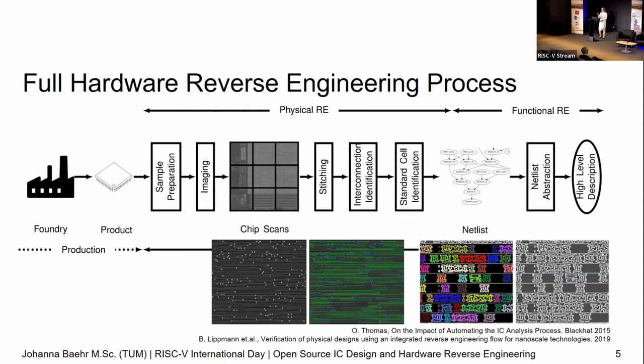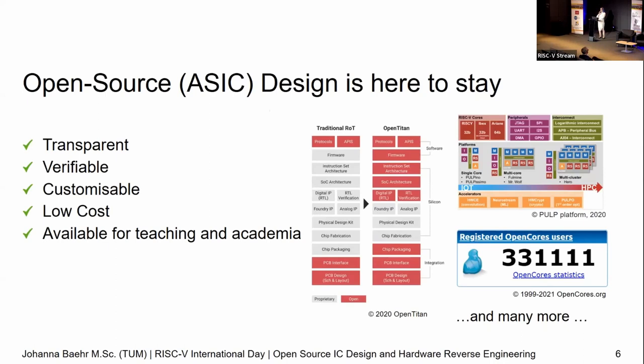Then we have to do interconnect identification — figuring out where the wires between the transistors are and how they fit together, over several layers. We have to do gate identification: figure out what gates are in there, how do they work, look into the technology and then put them all together. Eventually you get to a netlist, and that's where the fun part starts. This first part takes weeks, months, maybe longer. But we can do it in order to figure out if hardware Trojans are in there.